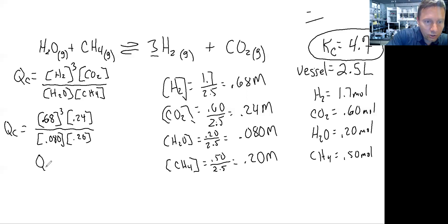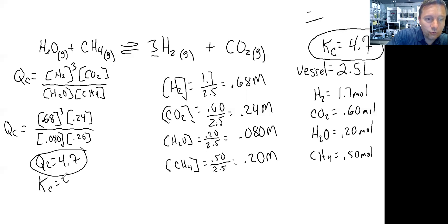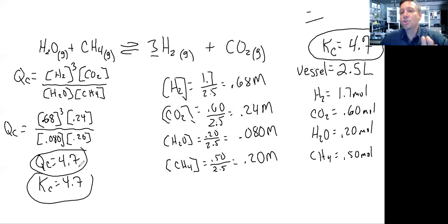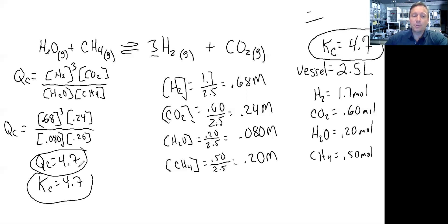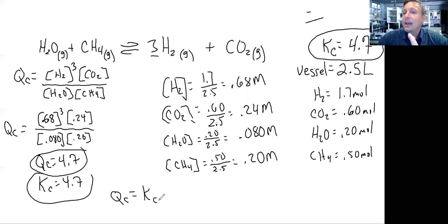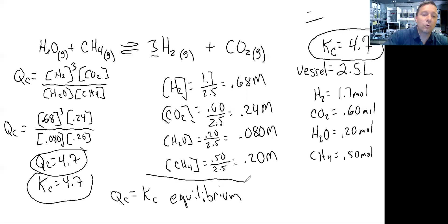So Qc equals 4.7 and my Kc equals 4.7. Now, remember you have to justify your answer. Please remember you have to give some tangible evidence. If you just write 'equilibrium' without justification, you won't get full credit. The justification is: Qc equals Kc, and Q equals K at equilibrium — that is how and why I can say this system is in equilibrium.